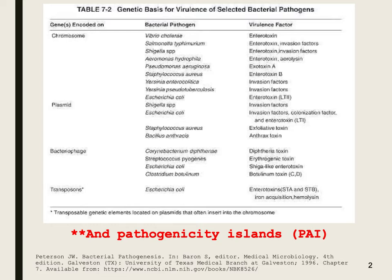Keep in mind that bacteria have a circular chromosome with different genes on there. We'll talk about how those genes are clustered together in an operon so that they're controlled, usually in sets. This can be used to the advantage of virulence factors because by turning that operon on, you can turn on a number of virulence factors if they're on the chromosome.